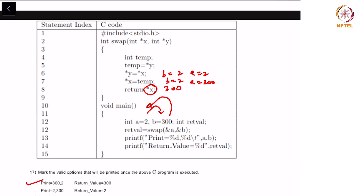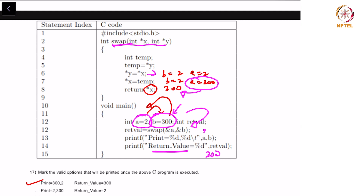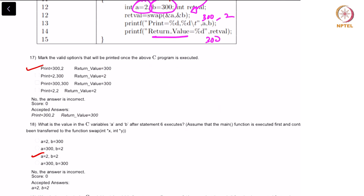Moving on to question 17: mark the valid options that will be printed once the above C program is executed. Here a equals 2 and b equals 300. The addresses of these two variables are being passed to a function called swap which has int star x and int star y as its parameters. Star y corresponds to the variable b in main — that becomes 2. In the next statement, x equals temp, so a becomes 300 and b becomes 2, and the return value is 300. So a and b are now 300 and 2, which is the right answer.